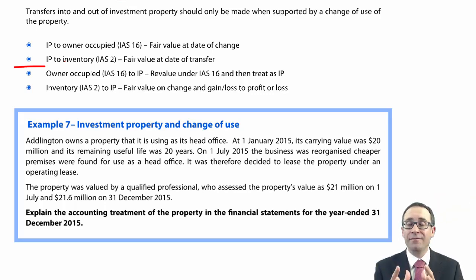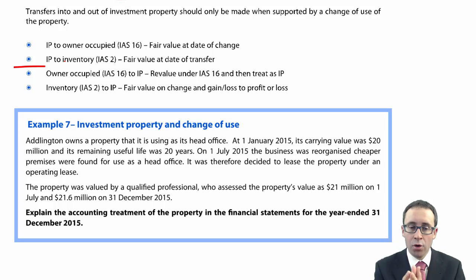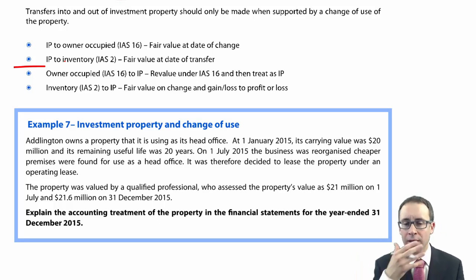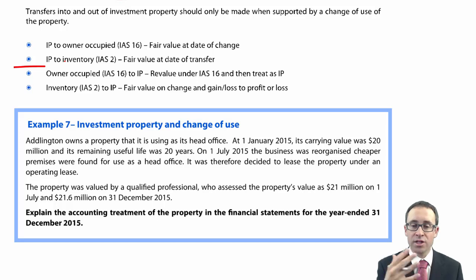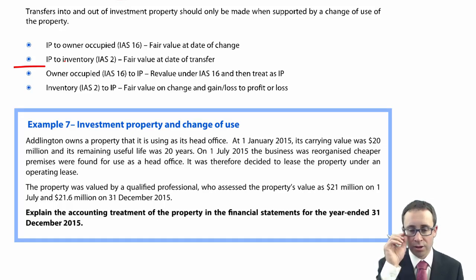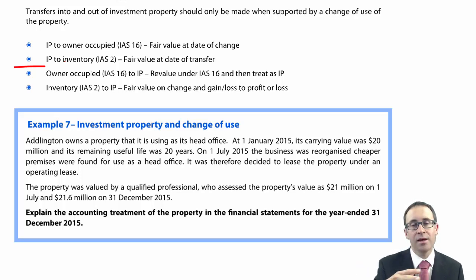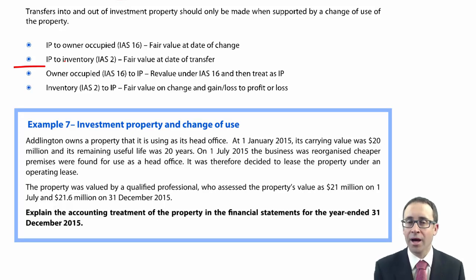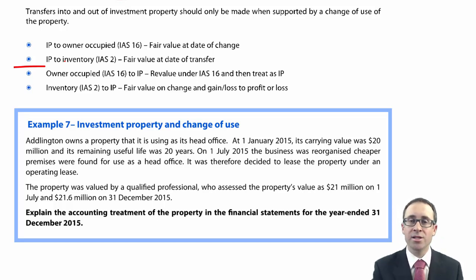The first two scenarios are where we had investment property — land, buildings, or part of a building — that is then moved over to owner-occupied use or inventory. The key point is that if it was investment property, whatever it then becomes, you take the fair value at the date of the change in use or transfer into inventory. Gains and losses go to profit or loss. Then for IAS 16, that fair value is depreciated going forward; for IAS 2 inventory, that fair value becomes the cost when valuing at the lower of cost and net realisable value.